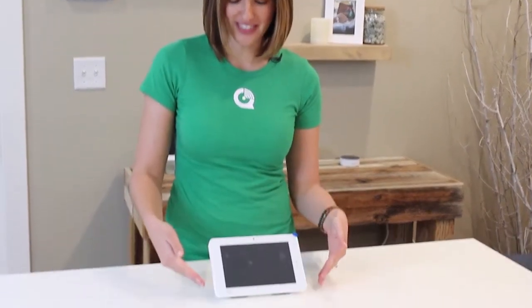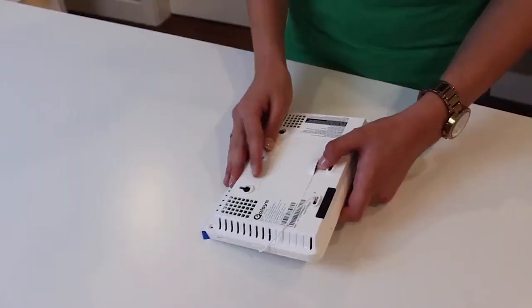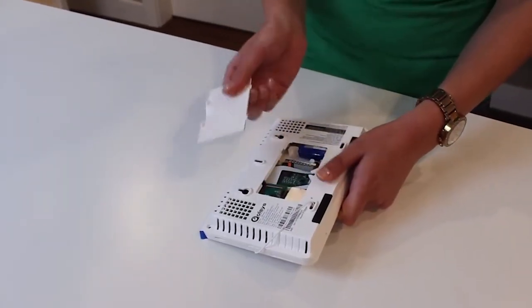Today we're going to show you how to mount the IQ Panel 2 on a table stand. Start by removing the rear access cover. Because we're choosing a table mount, we're going to keep this cover and replace it later.